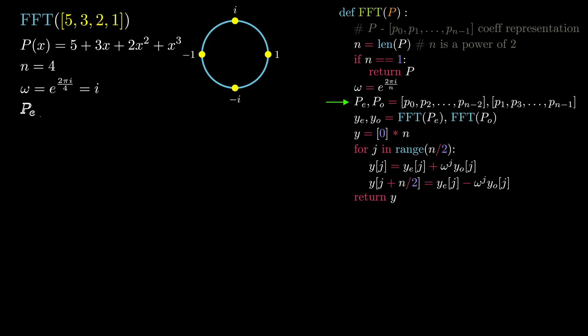We then define Pe as the even degree terms of 5 and 2, which makes Pe the linear function 5 + 2x. Po is similarly defined with odd degree terms of 3 and 1, which makes it another linear function, 3 + x.